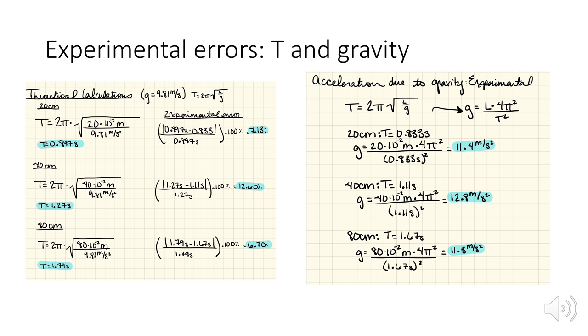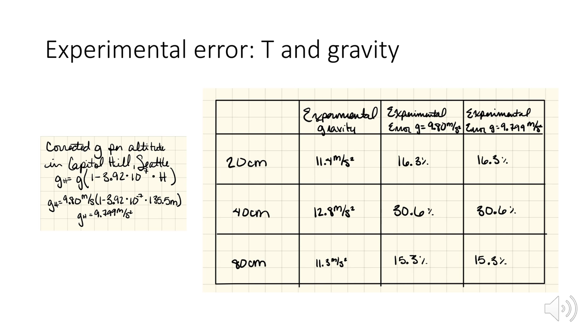We wanted to calculate gravity based on our data that we got from our experiment. Even with our calculated errors, we determined that gravity was somewhere between 11.3 and 12.8. Knowing that gravity is 9.81 is not great. So again, those errors are plaguing this data.